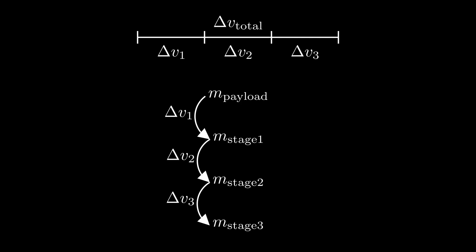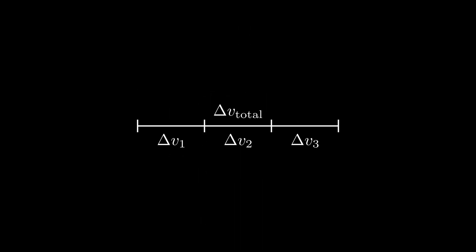So, if we have the delta v requirements for each stage, we can easily calculate the entire rocket mass by going top to bottom, and this works for more than two stages as well, but how to optimally split the delta v requirements between stages?